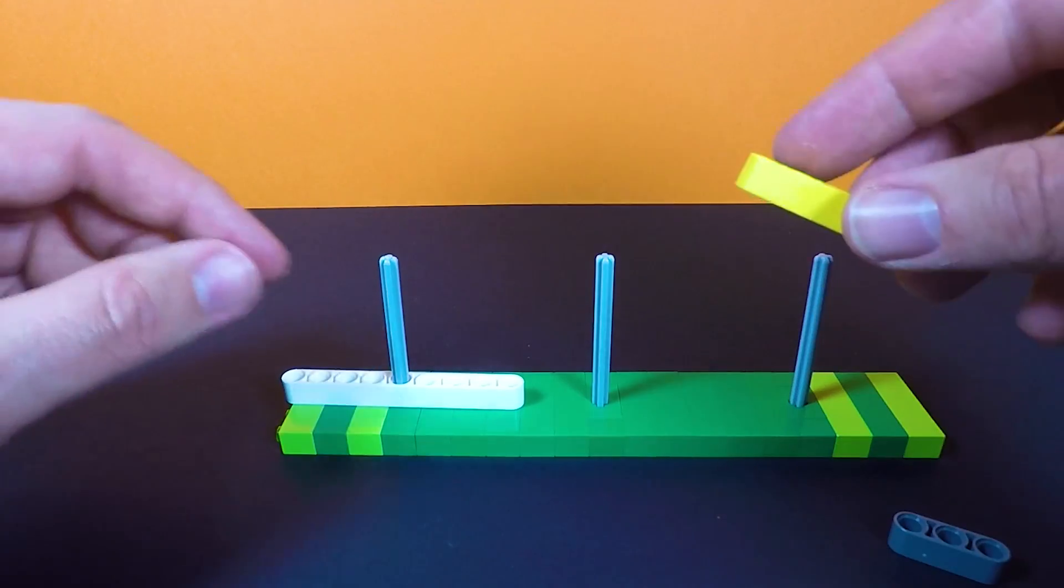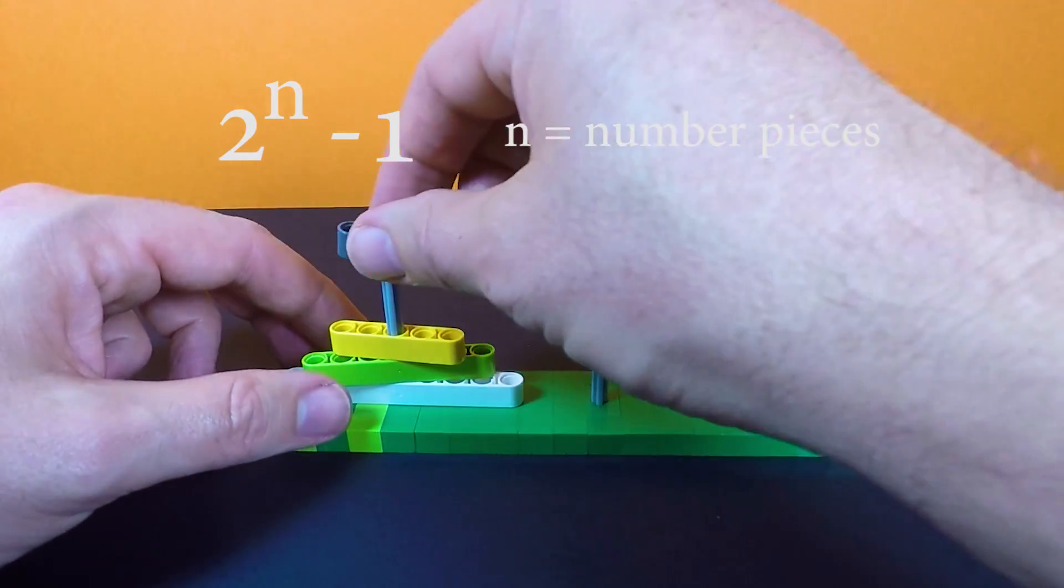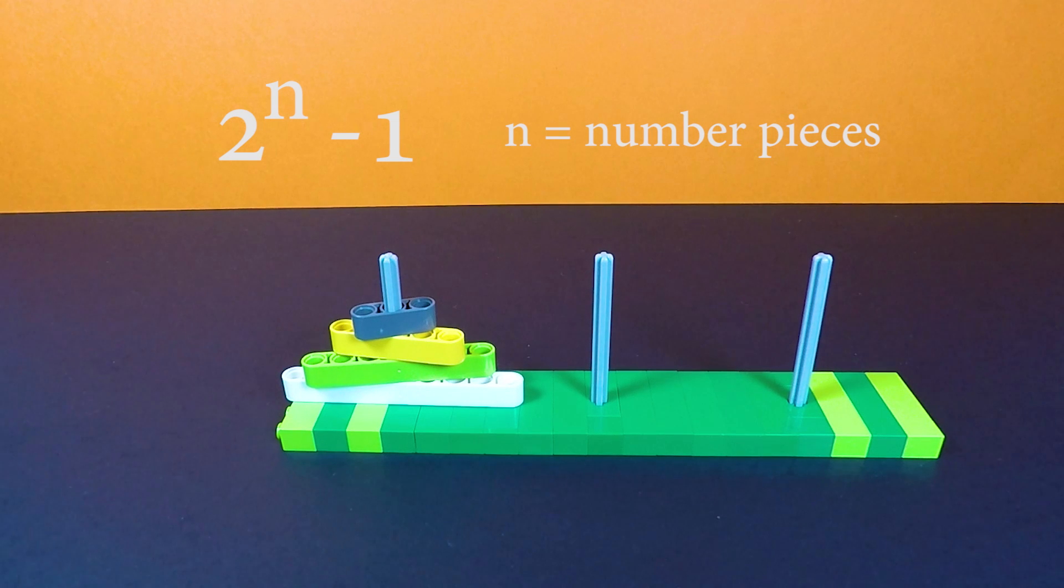Okay, so to solve this in the least amount of moves there is a mathematical equation. It's actually 2 to the power of n, where n is the amount of disks or tower pieces you have, minus 1.